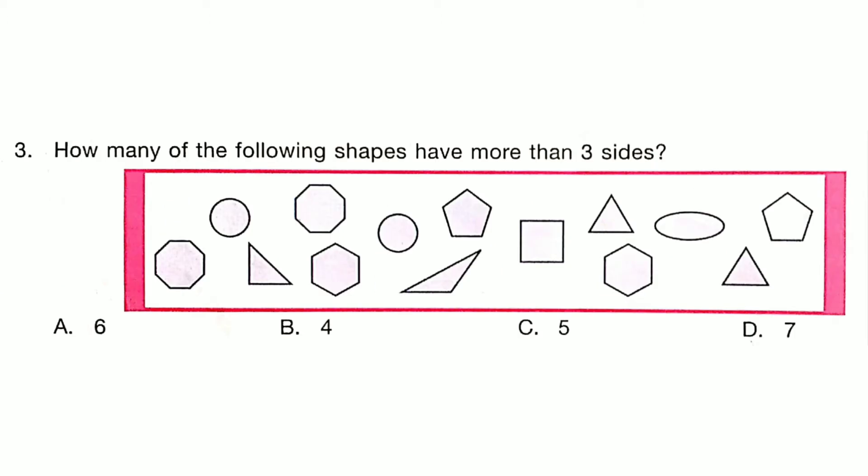How many of the following shapes have more than three sides? Answer is Option D: 7.